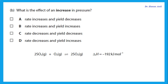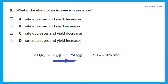What is the effect of an increase in pressure? Increasing pressure shifts the equilibrium to the side giving fewer molecules. Going forward gives 2 moles of SO3; going backward gives 2 moles of SO2 plus 1 mole of O2, totalling 3. So increasing pressure shifts the reaction forward. Since all species are gases, increasing pressure also increases the rate. Therefore both the rate and the yield of SO3 increase.